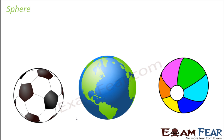Let's start with a new topic called sphere. It is a round solid figure where every point on its surface is equidistant from its center. It is a perfectly symmetrical object with no edges or vertices.